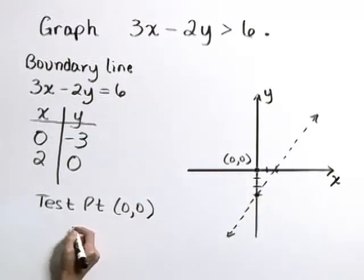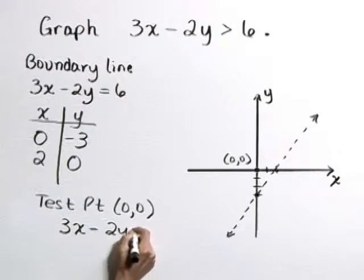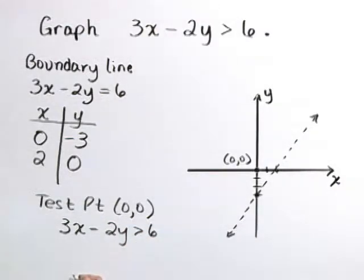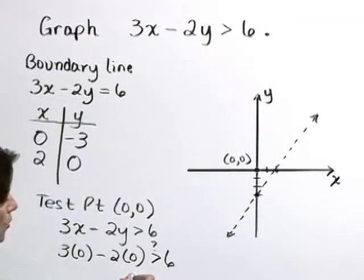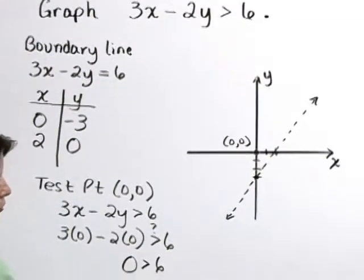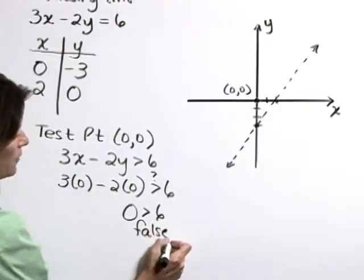In our original inequality, 3x minus 2y is greater than 6, substitute 0 for x and 0 for y to get 3 times 0 minus 2 times 0. Does that work? Is this greater than 6? That's 0 minus 0, or 0 is greater than 6? Nope, that's a false statement.